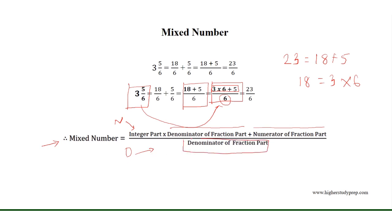Similarly, 5 and a half equals (5 times 2 plus 1) over 2, which results in 11 over 2.